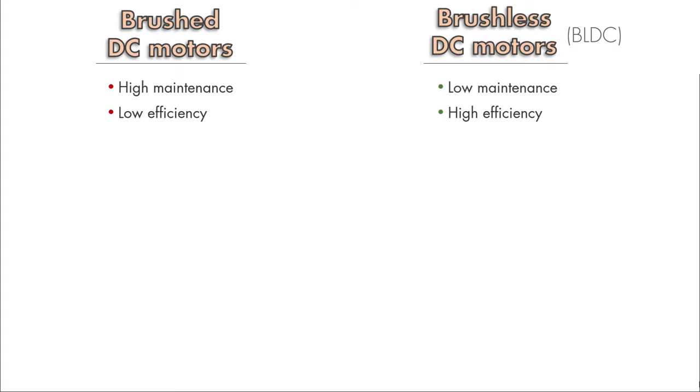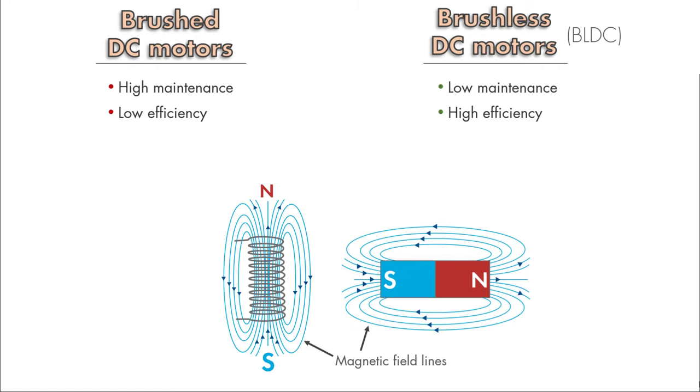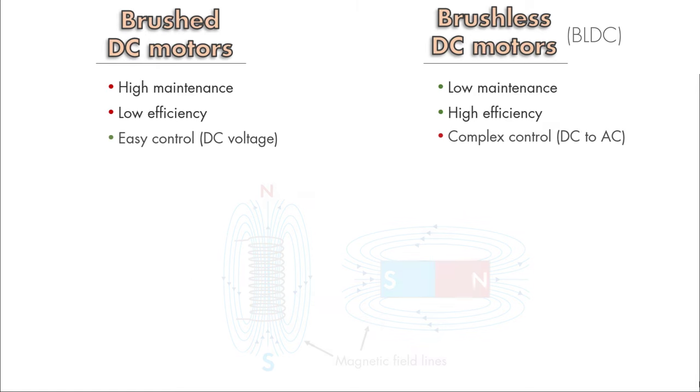Both types of motors operate based on a similar principle in which the rotational motion is generated through the attraction and repulsion of magnetic poles of permanent and electromagnets. However, the way these motors are controlled is very different. BLDCs require a complex controller to convert DC power to three-phase voltages, whereas a brushed motor can be easily controlled by a DC voltage.